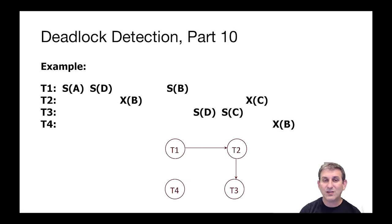T4 can run still. T4 wants an exclusive lock on B, which means that T4 is going to be waiting on T2. T1 is also waiting on T2. They're both waiting because of that exclusive lock that T2 has on B.